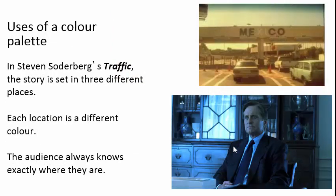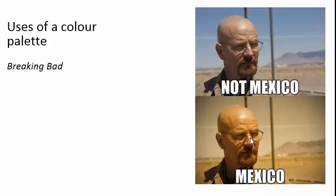Here's another example — Steven Soderbergh's Traffic. You'll see this done in movies all the time: Mexico is shot in warm earth colors, while rural or suburban Virginia is cool and bloodless, drained of color. Breaking Bad does the same thing — New Mexico is shot one way and Mexico another way. Anyone who's been to either place knows they look very similar, but they're shot differently so that we know where we are.